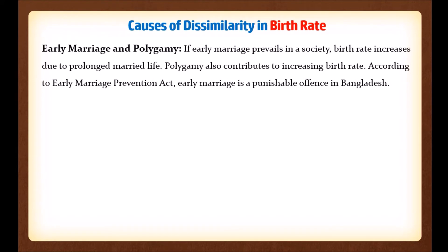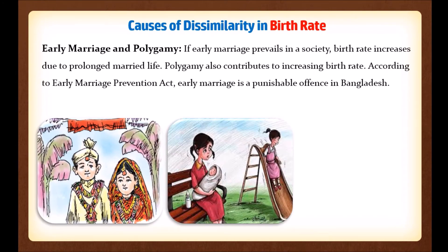The next cause is early marriage and polygamy. If early marriage prevails in a society, birth rate increases due to a prolonged married life — if a person marries at an early age, they will have a longer married life and thus give birth to more children. Polygamy — meaning getting married more than once — also contributes to increasing birth rate. According to the Early Marriage Prevention Act, early marriage is a punishable offense in Bangladesh.